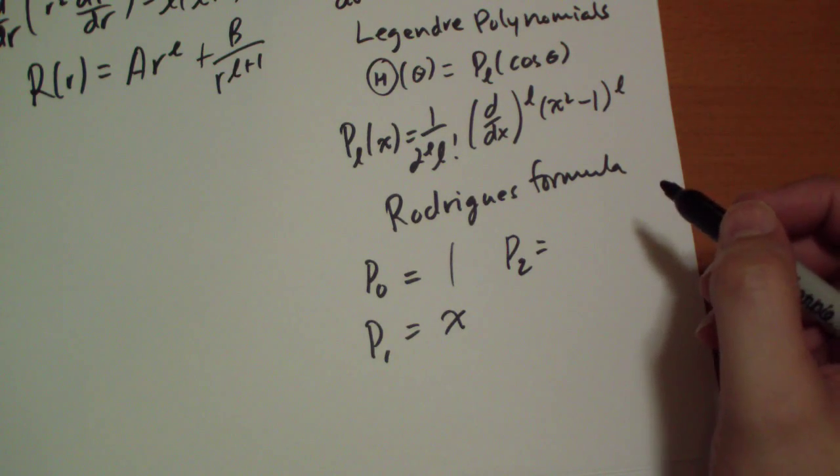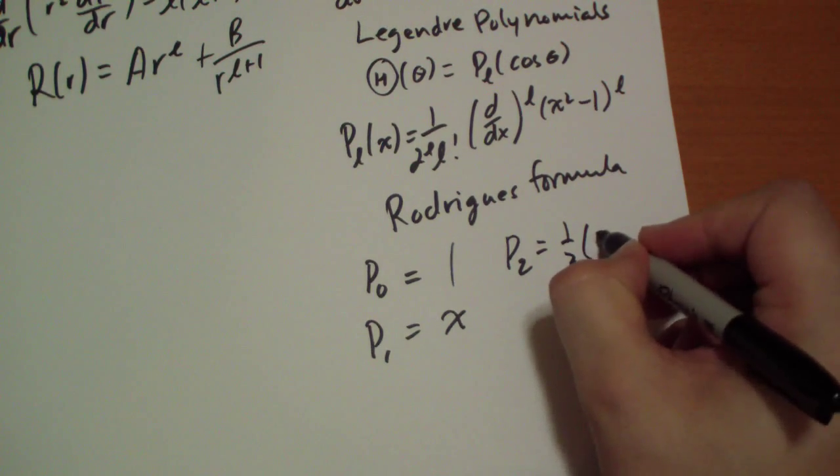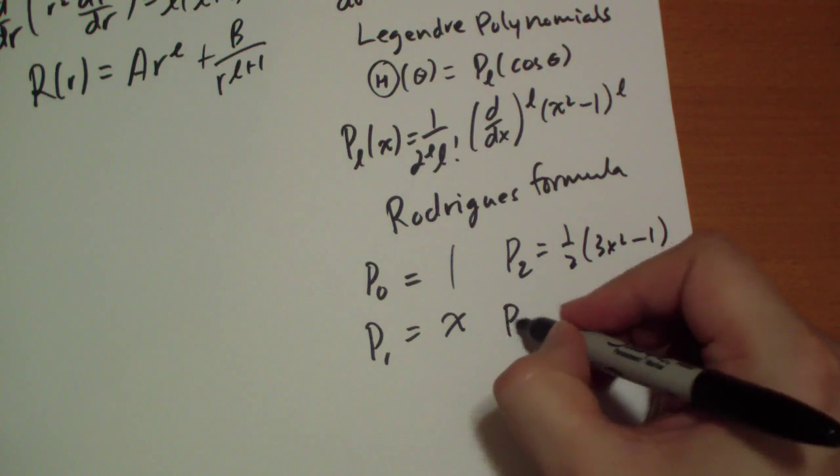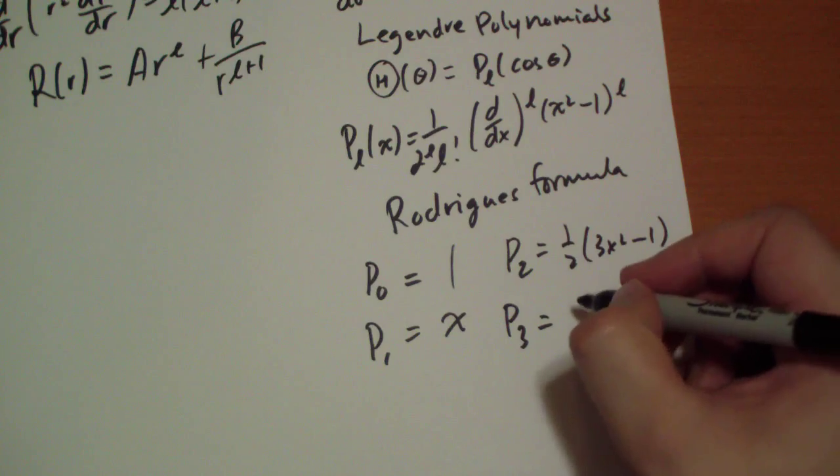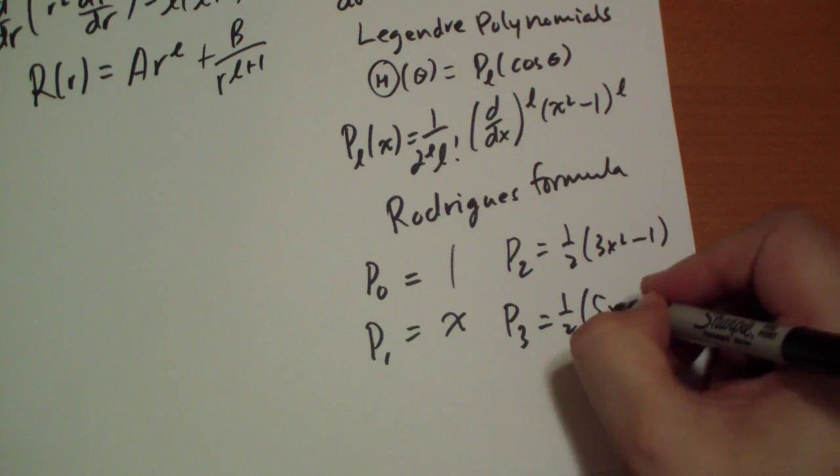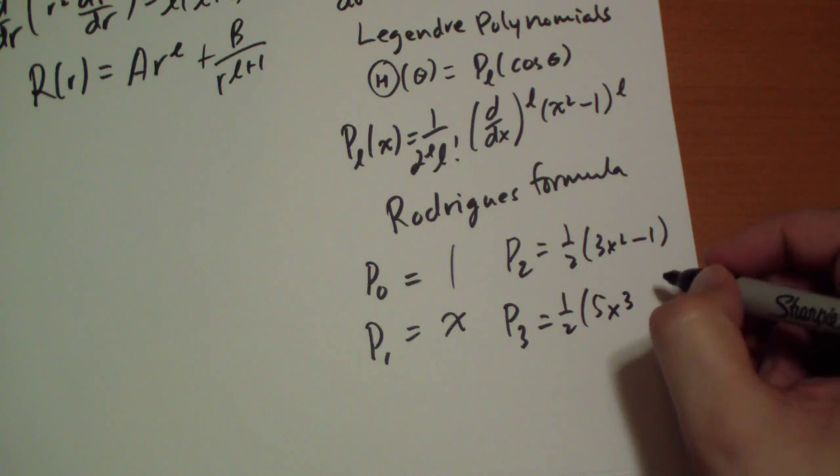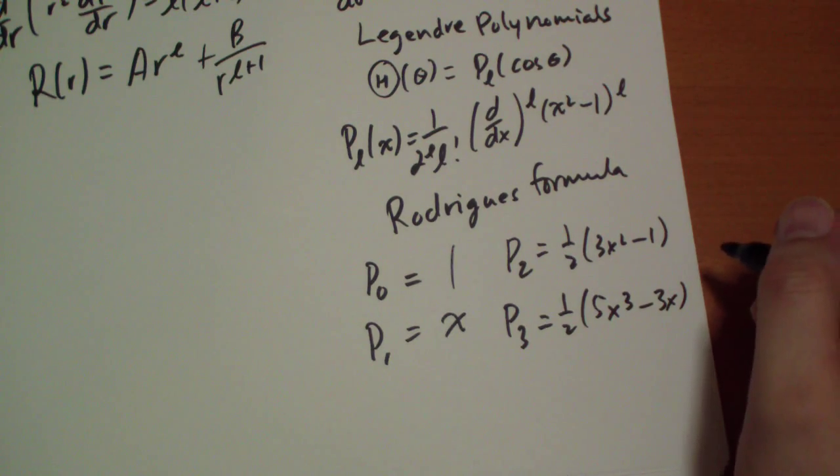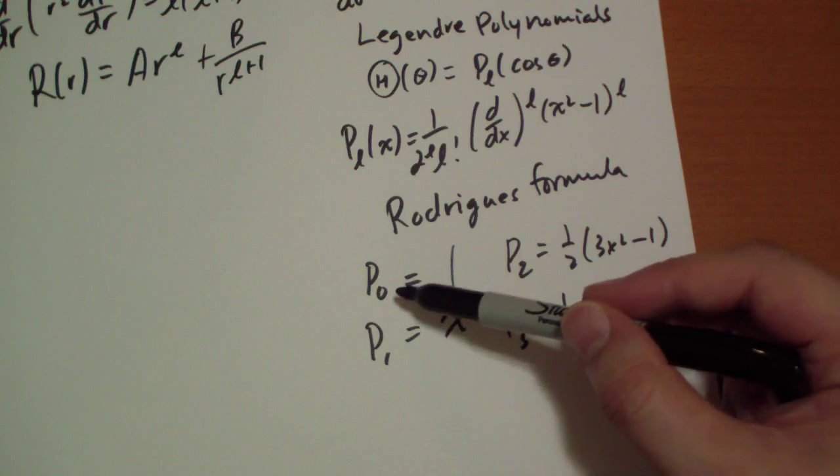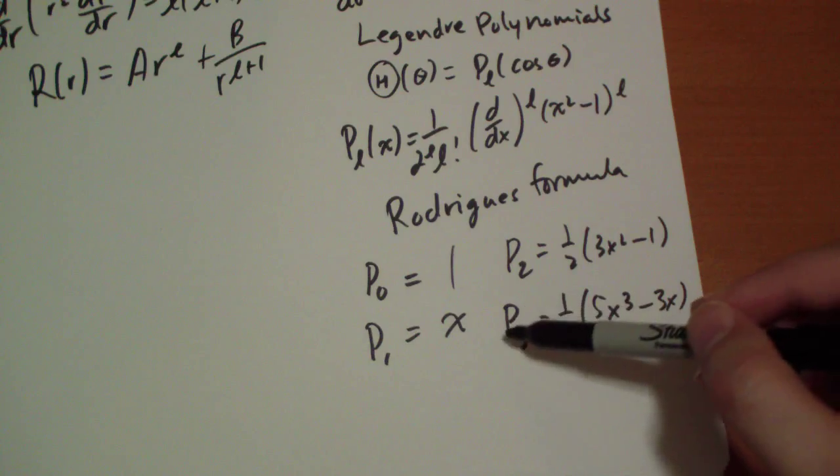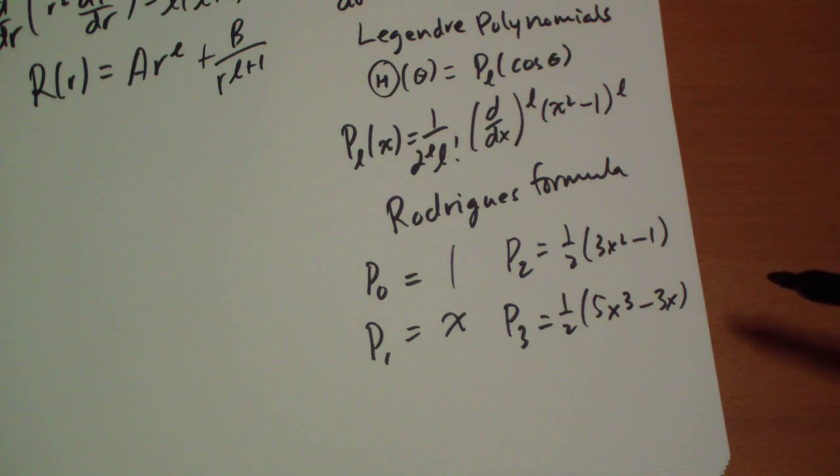P_2 is a little bit more complicated. You're going to end up with 1 half of 3x squared minus 1. And P_3, as you might imagine, is going to be something with an x cubed term. And this one actually has 1 half of 5x cubed minus 3x. Okay? And from there, it grows more complicated. And you can look in the book and you can have some fun with this if you want. But the important thing to notice is that P_0 has no x's in it, P_1 has 1x, P_2 has x squared, P_3 has an x cubed term.